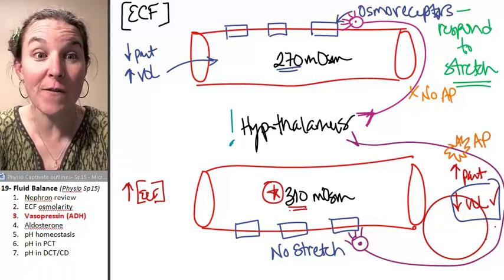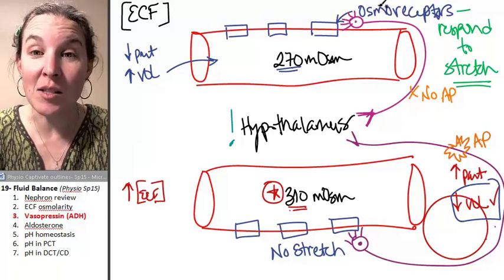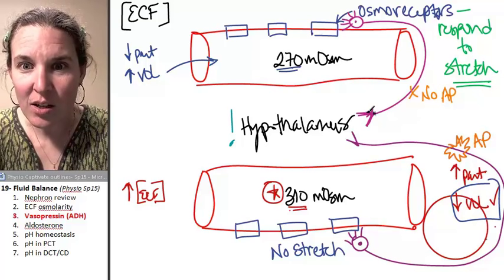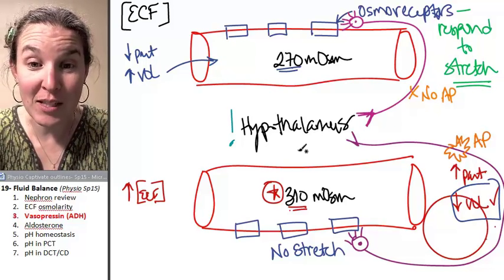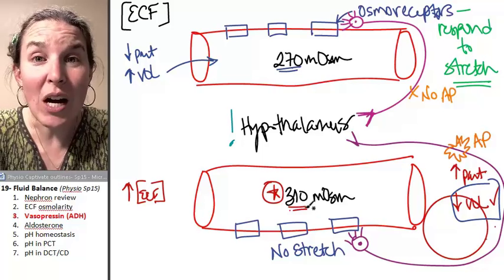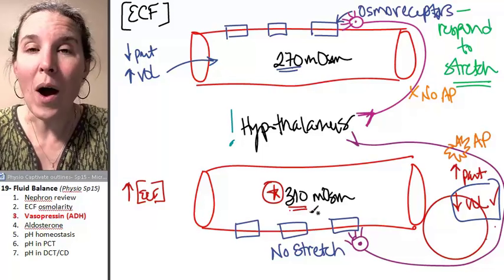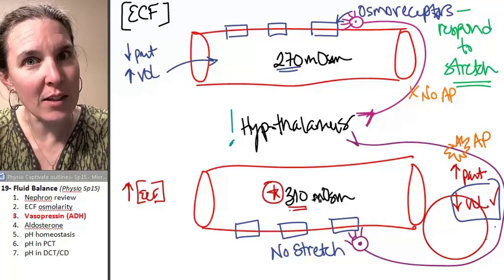So, does it make perfect sense that osmoreceptors that send the message, send the action potential to the hypothalamus saying, dude, we're too concentrated here. Life is getting a little sketchy. Why don't you produce some vasopressin?